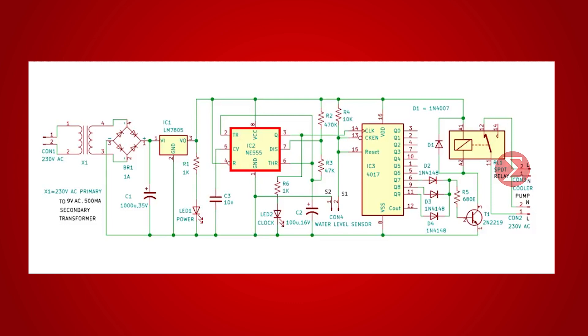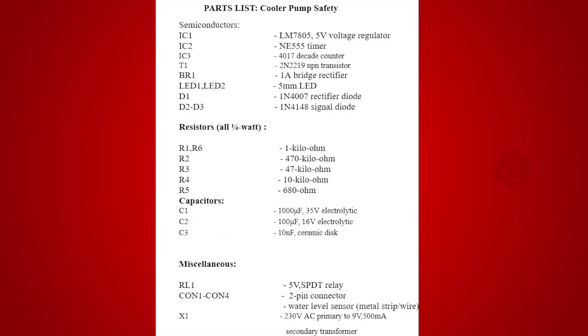After this, you will see 555 IC, and next is the decade counter IC4017. One transistor 2N2219 to drive a relay and a relay to connect with the cooler pump. Apart from these components, we need some resistors, capacitors, jumper wires and a breadboard.